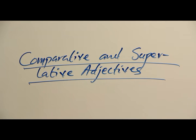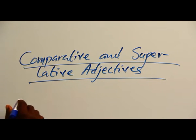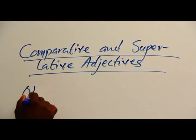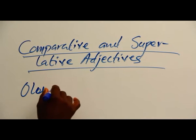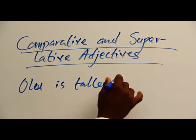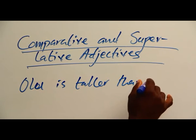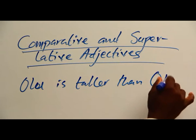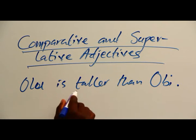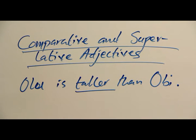Three and above. So we say, for example, Olu is taller than Obi. In this case, taller is a comparative adjective because we're talking about two.